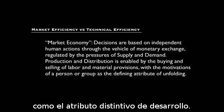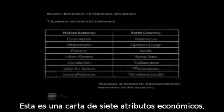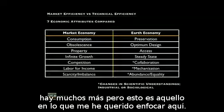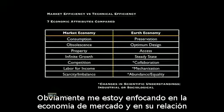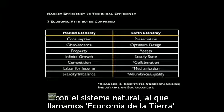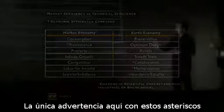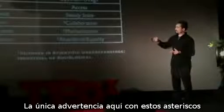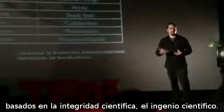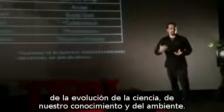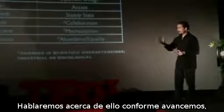Production and distribution is enabled by the buying and selling of labor and material provisions, with the self-interest of a person or group as the defining attribute of unfolding. This is a chart of seven economic attributes — many more, but this is what I wanted to focus on — intrinsic to each economy in comparison. I'm focusing on the market economy and its relationship to a natural system, what we're calling the Earth economy.